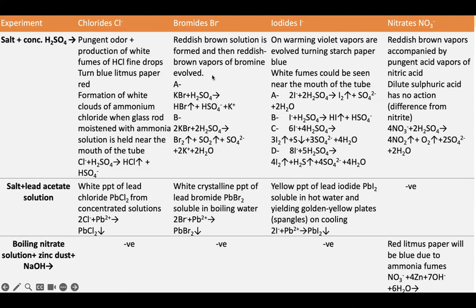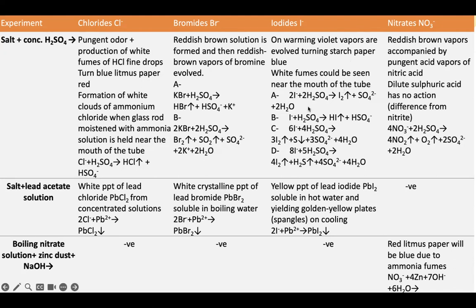You can further confirm chloride by lead acetate, which gives a white precipitate. For bromide, it will give reddish-brown fumes immediately, which are easy to detect; lead acetate gives a white crystalline precipitate in this case. If there is no reaction in the cold but on warming violet vapors are produced, it means it is iodide. Lead acetate gives a very characteristic yellow precipitate of lead iodide with iodide, making it easy to confirm.